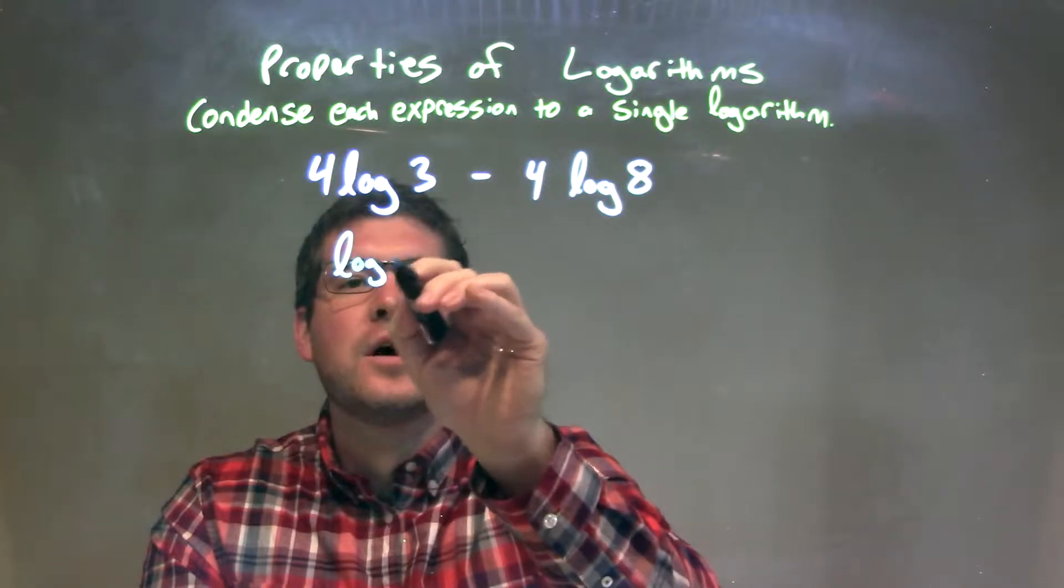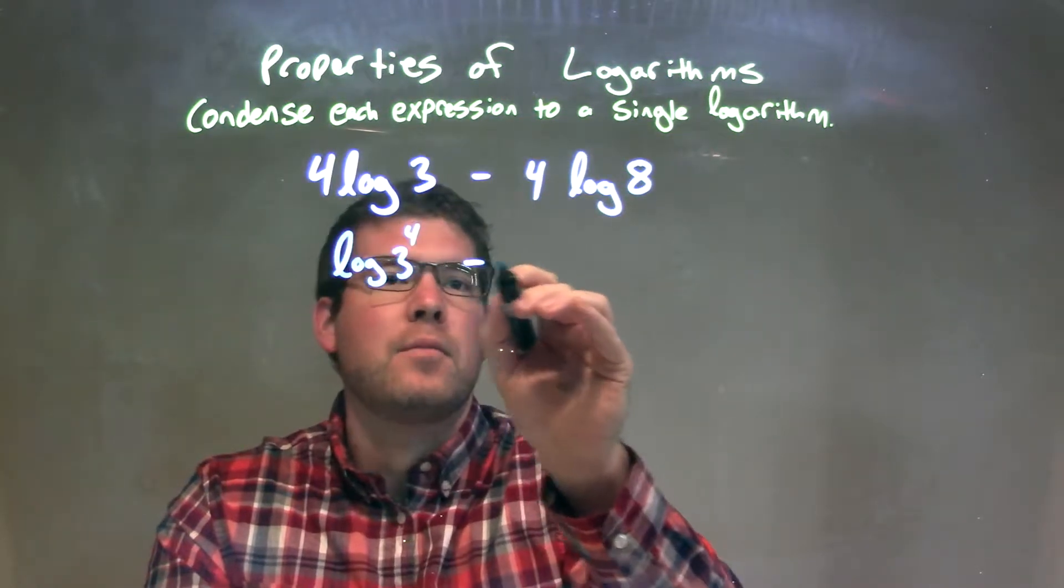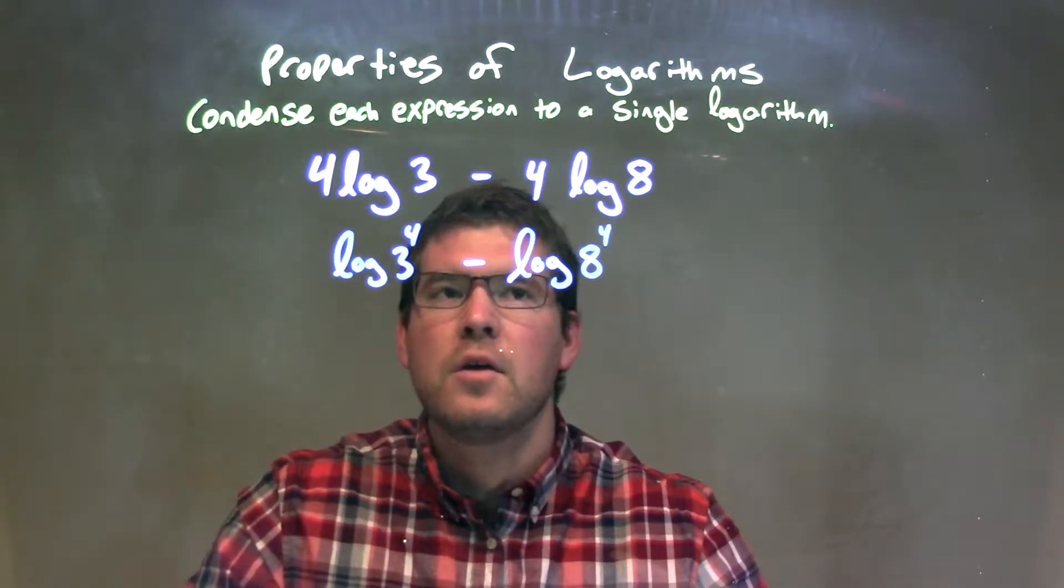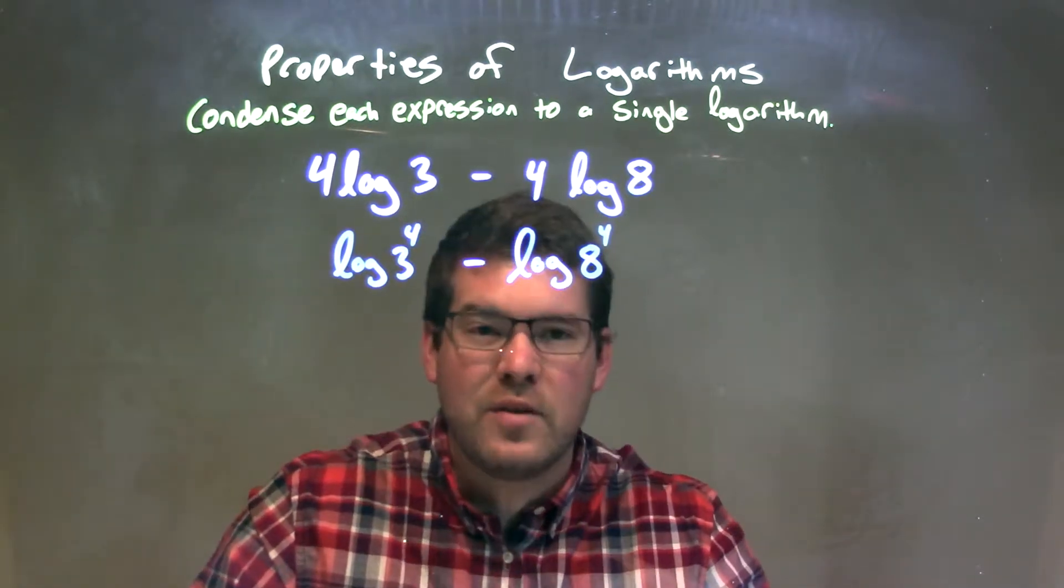So we have log of 3 to the 4th power minus log of 8 to the 4th power. Okay, so now we have log 3^4 minus log 8^4.